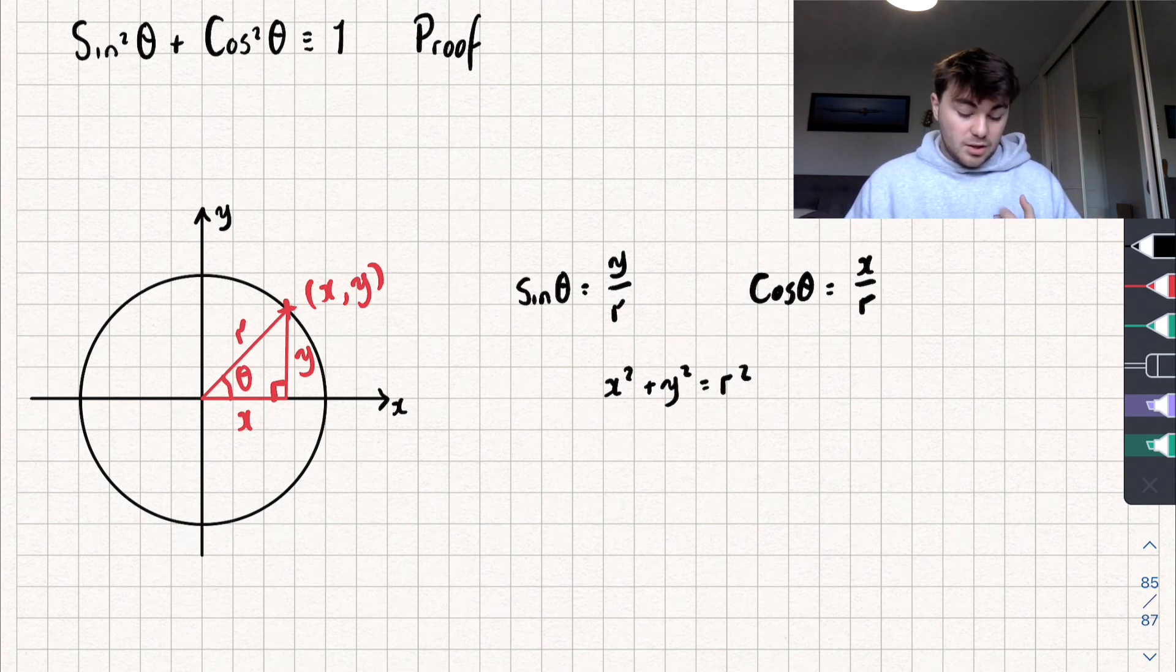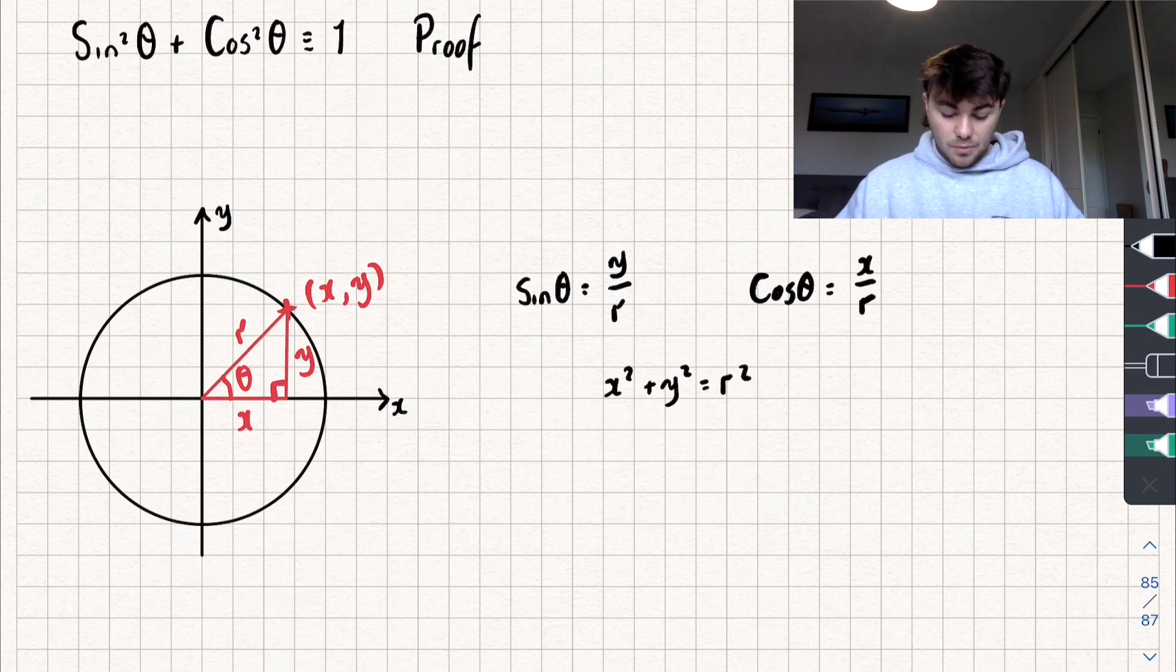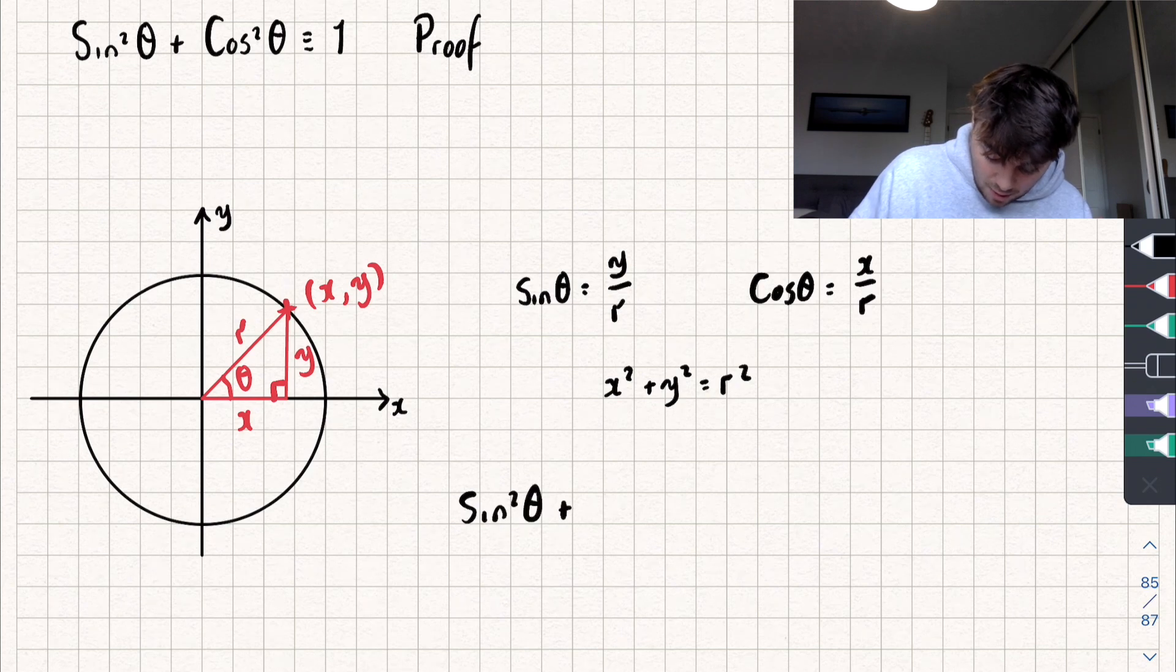So we have that sine squared theta plus cos squared theta is identical to one. How could we show that? Well, let's just write out sine squared theta plus cos squared theta.